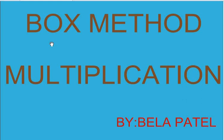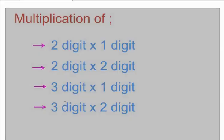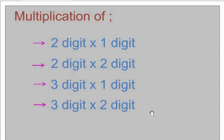One of them is the box method, or we can say the grid method of multiplication. In this module, we will see multiplication of 2-digit by 1-digit number, 2-digit by 2-digit number, 3-digit by 1-digit number, and 3-digit by 2-digit number with examples. So let us get started.